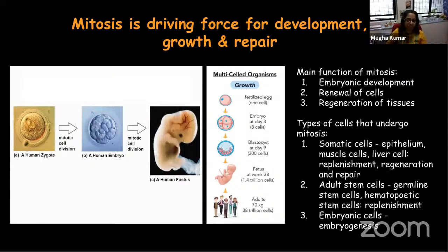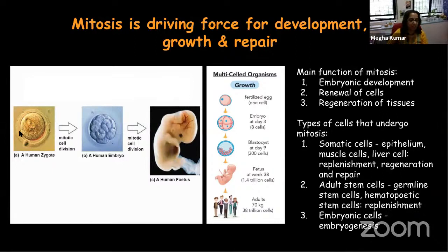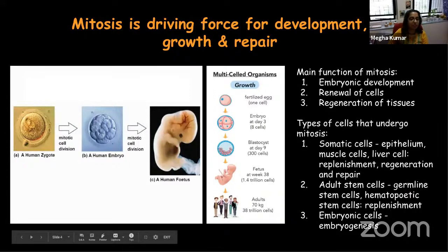Why are we looking at mitosis, particularly in my lab? Mitosis serves many major functions. The first one being embryonic development — this is what we primarily study here. It's also important for renewal of cells and regeneration of tissues. If you look at a human zygote, it undergoes many mitotic events to form an embryo, and then many, many rounds of mitosis to form a fetus, and the fetus will also give rise to the adult later, still undergoing a lot of mitotic events.